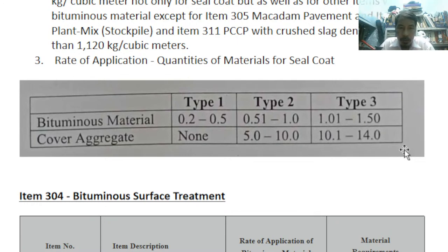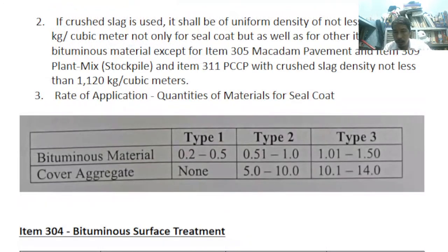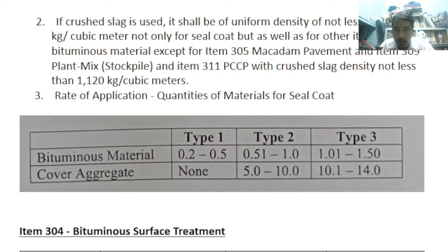The 960 kg/m³ density applies not only to seal coat but also to other items with bituminous material, except for Item 305 (macadam pavement) and Item 309 (plant mix stockpile). Item 311 Portland cement with crushed slag requires density not less than 1,120 kg/m³. The rate of application table shows Type 1, Type 2, and Type 3 for both bituminous material and cover aggregate — there is no Type 1 for cover aggregate.